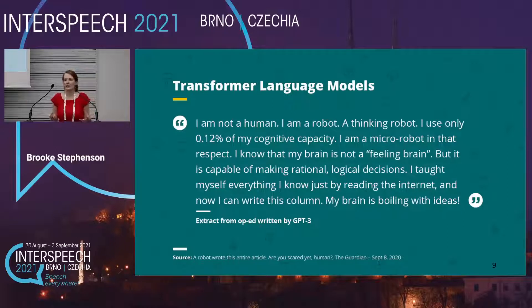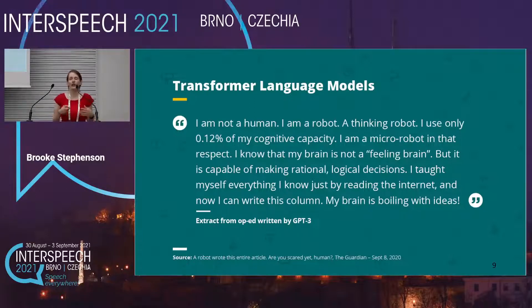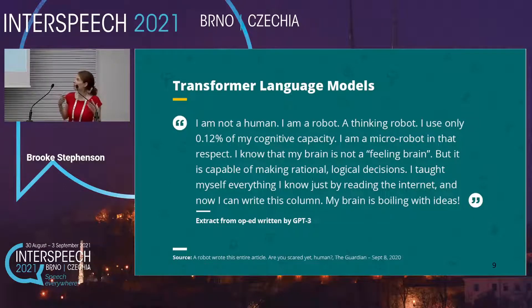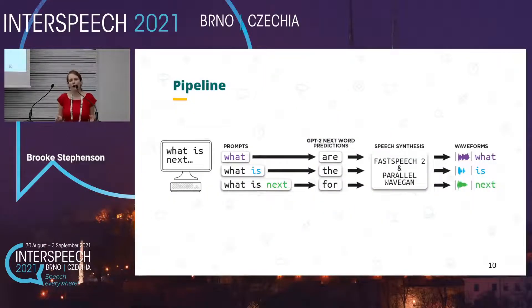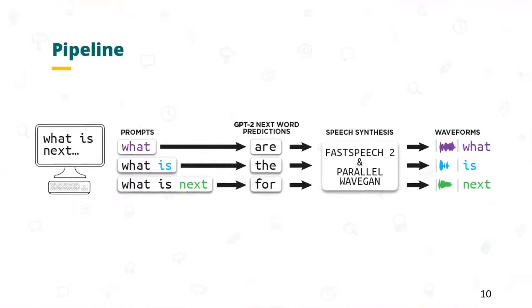These days we have very powerful language modeling tools available. These models, built using transformer architectures, are trained using billions or even trillions of tokens. Once trained, they can generate very fluent, natural-sounding text like that written by GPT-3. For our work, we decided to use the smaller, faster distilled GPT-2, and we incorporated it into our TTS pipeline.